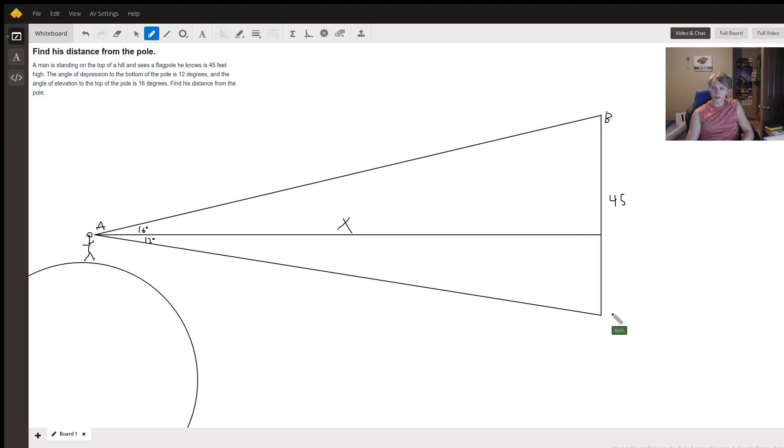The sine of angle A divided by the length of the side opposite A (call that little a) is equal to the sine of angle B or angle C divided by the length opposite of angle B or angle C. I'm going to be using A and C in this case.